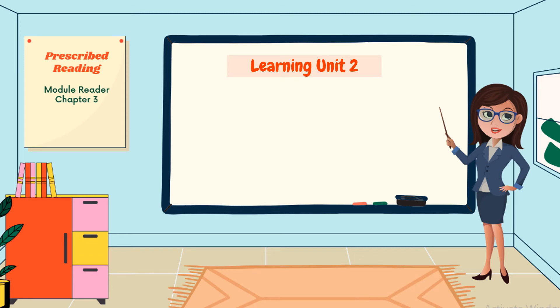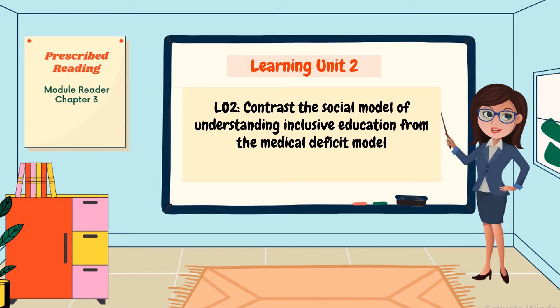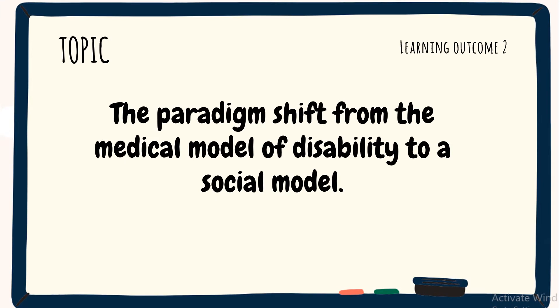In this video, we focus on Learning Unit 2, Learning Outcome 2: contrast the social model of understanding inclusive education from the medical deficit model. The topic of the video is unpacking the paradigm shift from the medical model of disability to the social model.